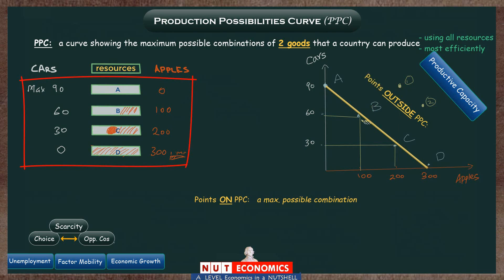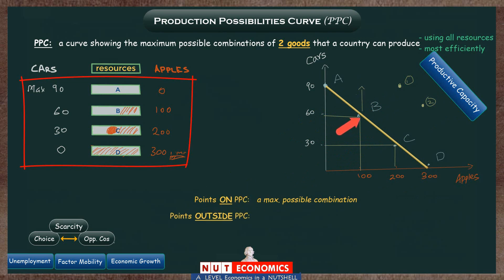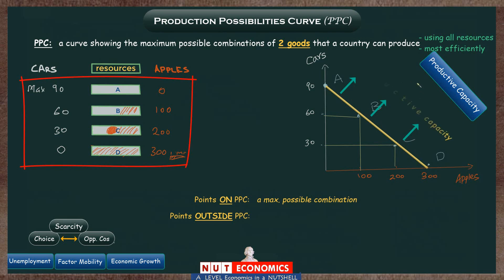Let's assume a country starts operating at point B, using its resources to make 100 apples and 60 cars. Since this is a point on the PPC, it is the maximum possible you can produce — you have exhausted all the resources to produce this combination. Now to get to a point outside the PPC, you would need to make more cars and more apples as well. Can you do that? Of course not — your resources have been exhausted. Any point outside or above or beyond a PPC is desirable, because it reflects a combination much more than your resources allow, but it is unattainable.